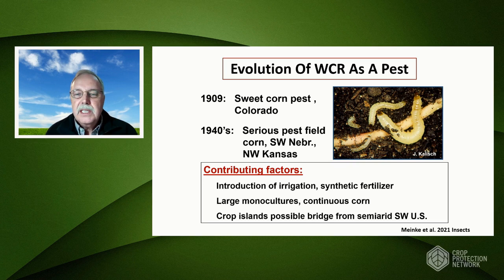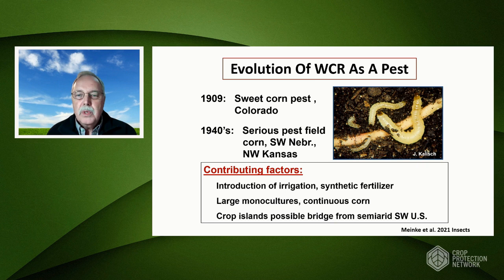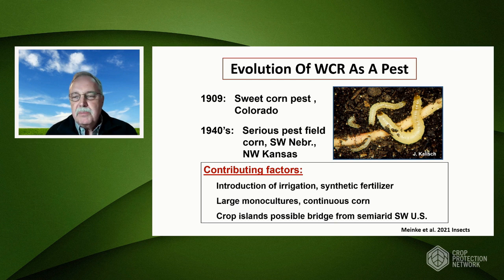Some things that probably contributed to this were the introduction of irrigation and synthetic fertilizer, especially after World War II. We started growing large monocultures of continuous corn — planting corn in the same field for two or more years. It's been hypothesized that these large crop islands possibly provided the bridge for this species to build up large densities and then move east, as shown on the previous slide.